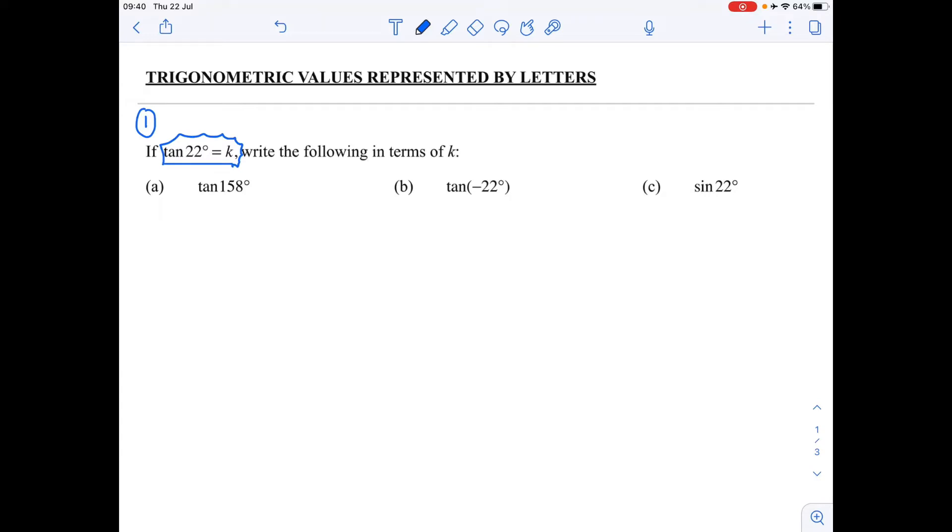So if we start off with this, if we look at a, we see we've got an angle bigger than 90 degrees there. So we want to change it to an acute angle by knowing our knowledge of reduction. So 158 is going to be in the second quadrant and we know that tan is negative there. And 180 minus 158 is equal to 22 degrees. So that reduced is minus tan 22.